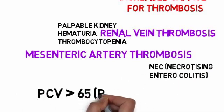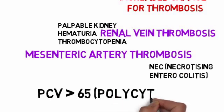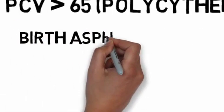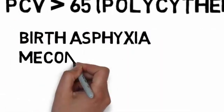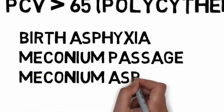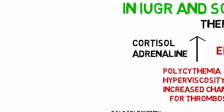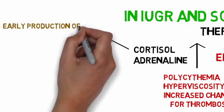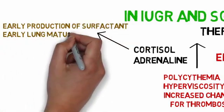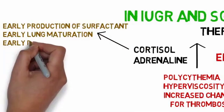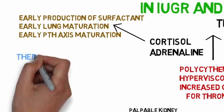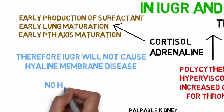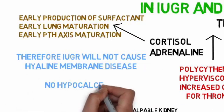PCV value will be greater than 65%, indicating polycythemia, which is associated with birth asphyxia, meconium passage, and meconium aspiration. Due to increased levels of cortisol, there will be early production of surfactant and early lung maturation, as well as early PTH axis maturation. Therefore, IUGR will not cause hyaline membrane disease, and there will be no hypocalcemia.